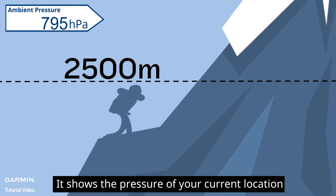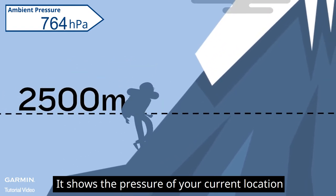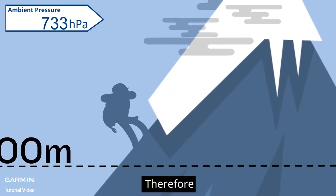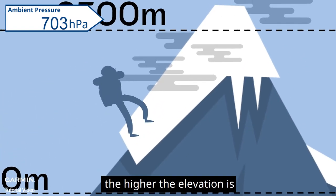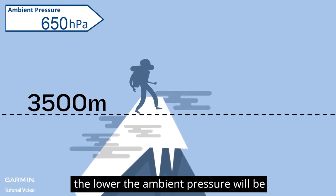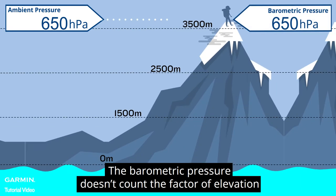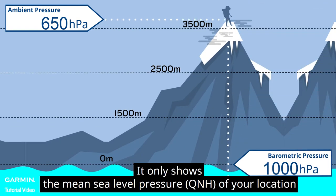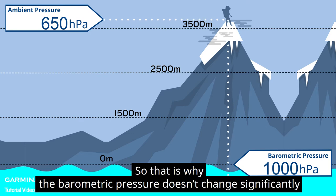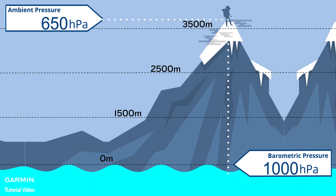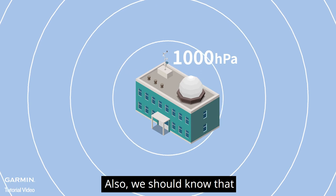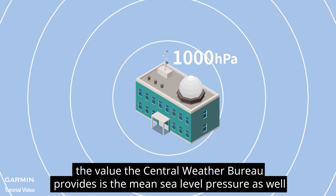The ambient pressure considers both weather and elevation factors — it shows the pressure of your current location, so the higher the elevation, the lower the ambient pressure will be. The barometric pressure doesn't account for elevation; it only shows the mean sea level pressure of your location. That is why the barometric pressure doesn't change significantly.